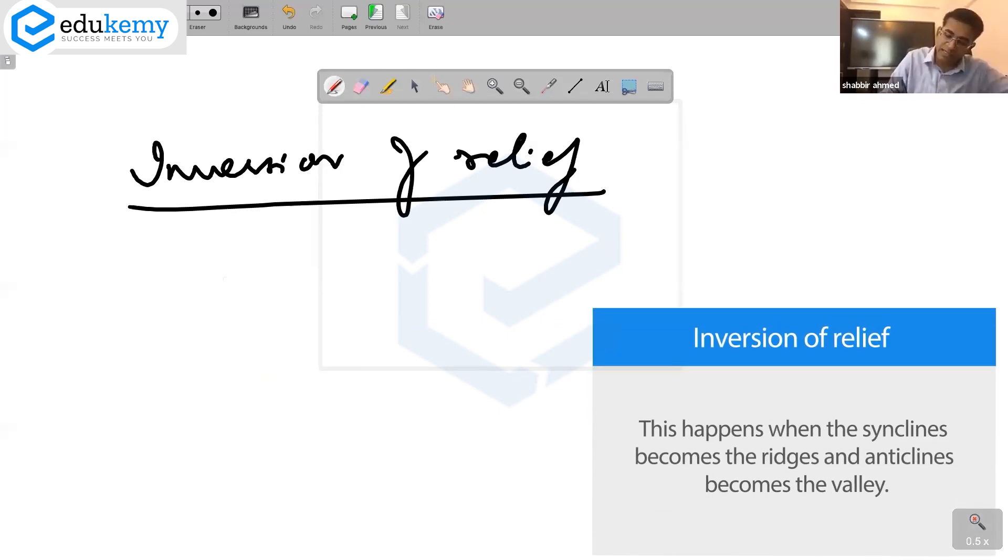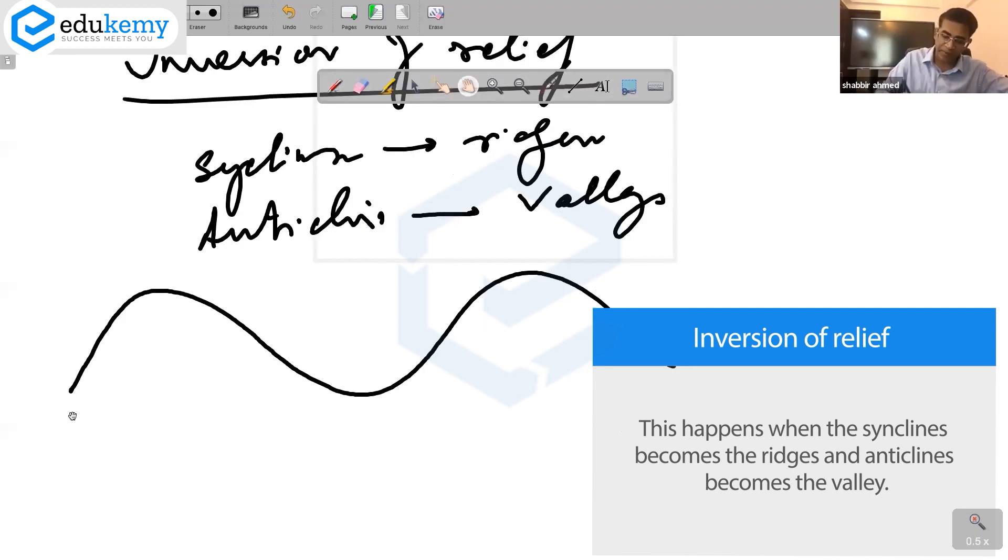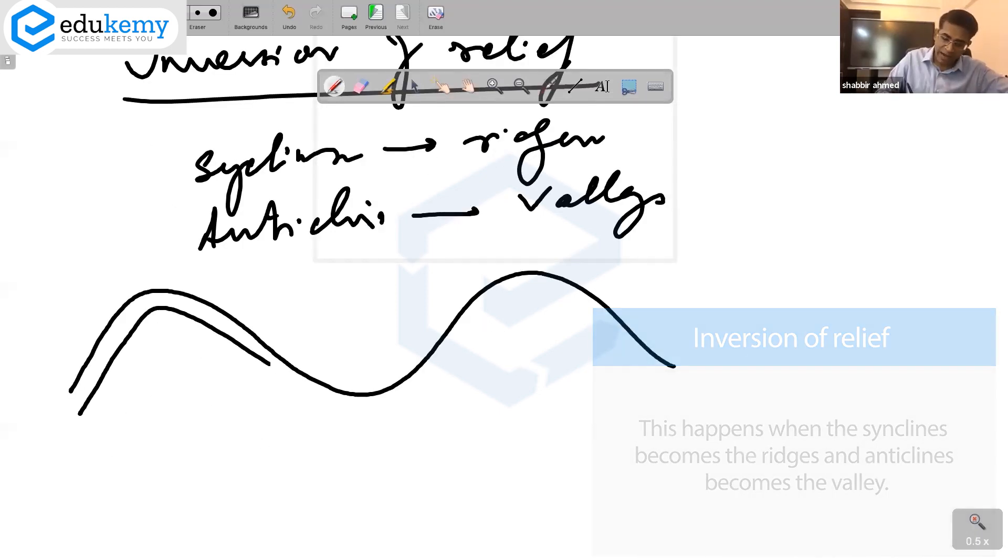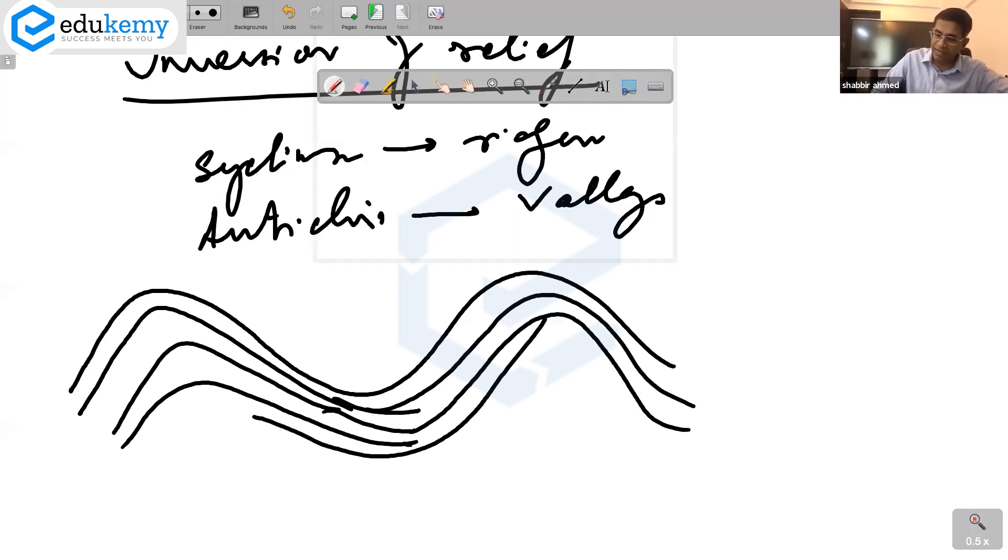You can add this in the last part of discordance. This happens when the synclines become the ridges and the anticlines become the valley. This is the original landscape where the anticlines are ridges, the syncline beds are the valleys, your original feature there.